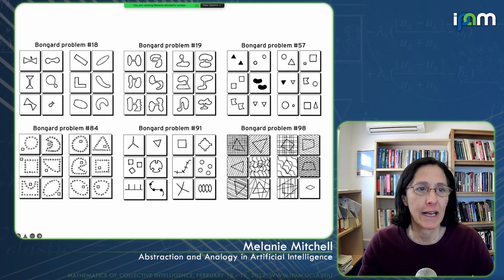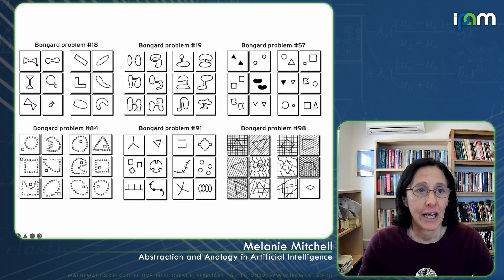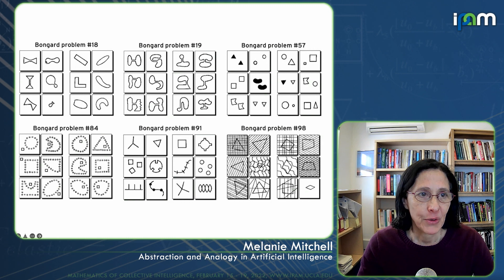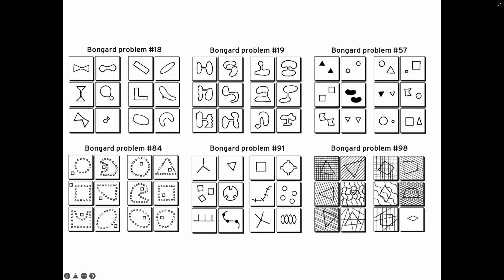A Vanguard problem has six figures on the left-hand side and six on the right. On each side, the six boxes illustrate some abstract concept, and the goal is to articulate what that abstract concept is. For example, these figures have kind of an indentation or a neck whereas these figures don't. Or over here, identity of shape and color versus difference. And there are even more abstract ones like the notion of three versus four.